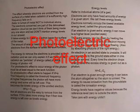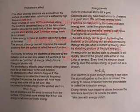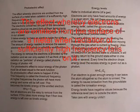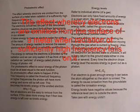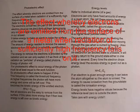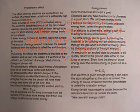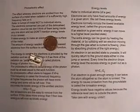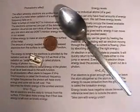The photoelectric effect is the effect whereby electrons are emitted from the surface of a metal when radiation of a sufficiently high frequency falls on it. It's important to realise that when we talk about the photoelectric effect, we're not talking about individual atoms — we're talking about lumps of metal, pieces like these.